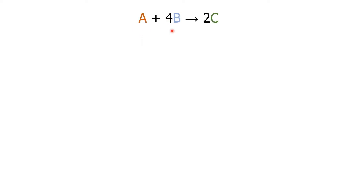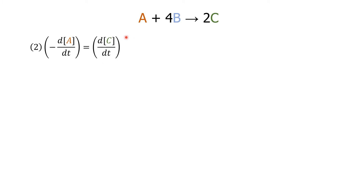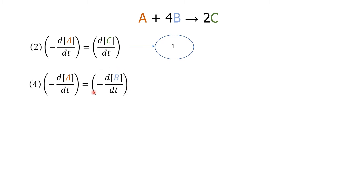Let's have a look at the following reaction: A reacts with 4B to form 2C. By looking at the stoichiometric relationship, we know that in order to form 2 mol of C, 1 mol of A and 4 mol of B react together and are used up at the same time. This means that the rate of formation of C is twice the rate of consumption of A, and the rate of consumption of B is 4 times the rate of consumption of A.